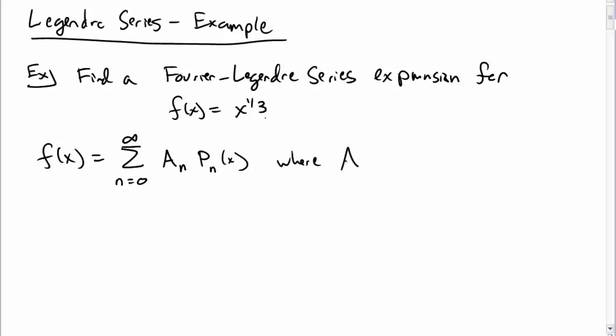And these a_n coefficients can be calculated as (2n+1)/2 integral from negative 1 to 1, and then we take the product of our function x to the 1/3rd and then the nth Legendre polynomial. And now we just need to calculate. That's really all we need to do at this point. We just need to calculate these coefficients.